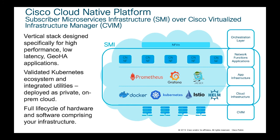The next layer is the cloud infrastructure itself: Docker, Kubernetes, storage, and Helm as a chart manager. On top of that we have the common application infrastructure — Prometheus, Grafana, and Jaeger for open tracing. Above that is the layer containing the 5G network functions like SMF, PCF, NRF, and so on — all orchestrated and managed by Cisco's orchestration layer: NSO (Network Service Orchestrator) and ESC (Elastic Server Controller).